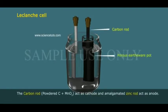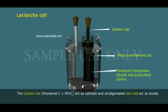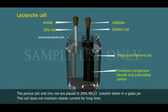The carbon rod powered C plus MnO2 act as cathode and amalgamated zinc rod act as anode. The porous pot and zinc rod are placed in 20% NH4Cl ammonium chloride solution taken in a glass jar.